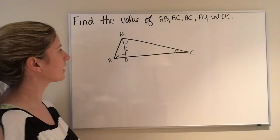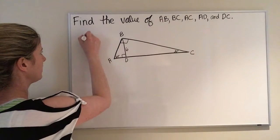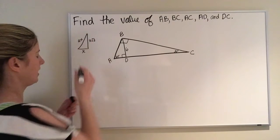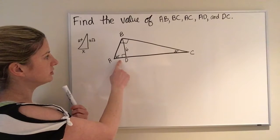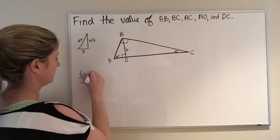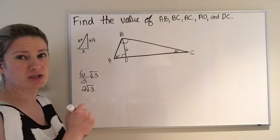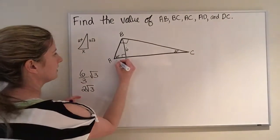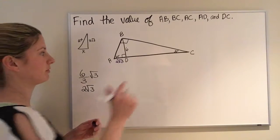We're given that BD is 6. Looking at the small 30-60-90 triangle, our ratio is x, x√3, and 2x. BD is the long leg. To go from the long leg to the short leg, we divide by √3 and multiply by √3, so we do 6 divided by √3 times √3 — which gives us 2√3. So AD equals 2√3.